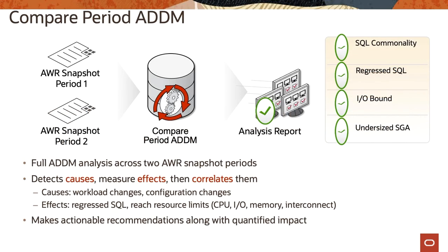Compare Period ADDM is important because you can see analysis across two AWR snapshot periods. It helps detect cost, measure effect, and provides correlation. You can see workload changes, configuration changes, and their effects through regressed SQL, and take actions based on these compare period reports. Compare period reports allow automatic comparison of two periods to determine what has changed, providing a valuable mechanism for quick performance troubleshooting.